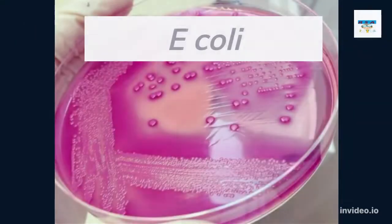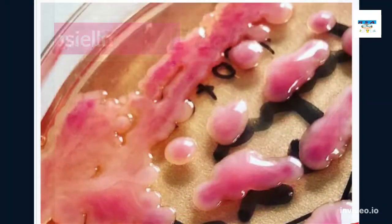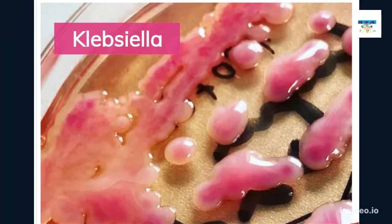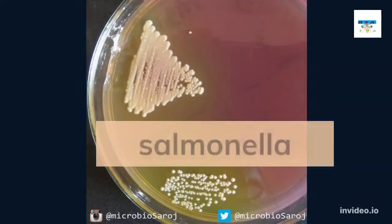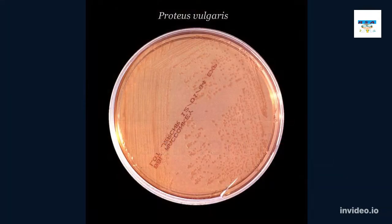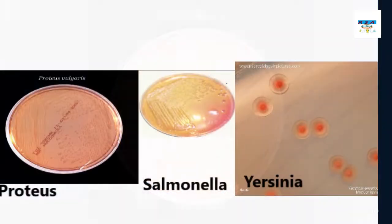Few examples of lactose fermenters are E. coli, Klebsiella, and Enterobacter. Gram-negative bacteria that thrive on McConkie agar but do not ferment lactose appear colorless on the medium, and the agar surrounding the bacteria remains relatively transparent. Few examples of non-lactose fermenters are Salmonella, Proteus, Yersinia, and Pseudomonas.